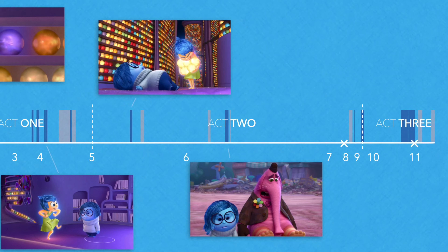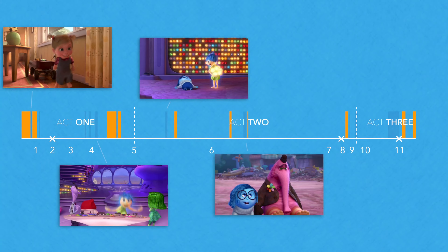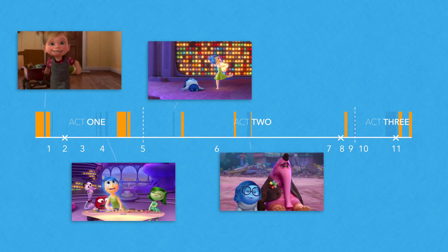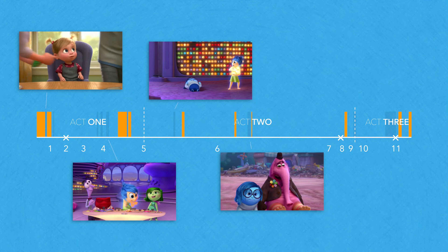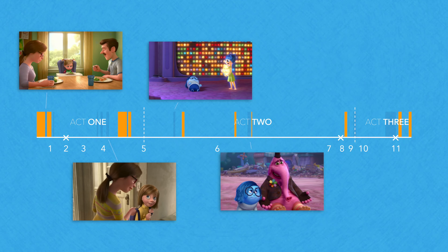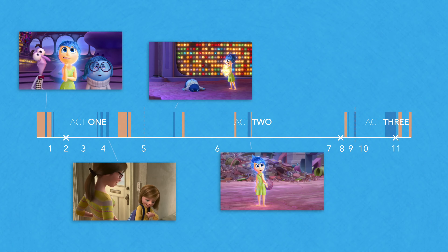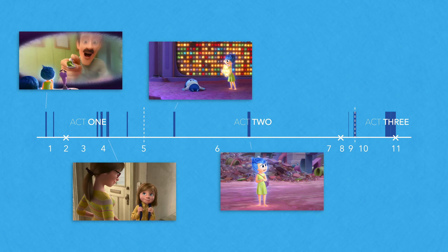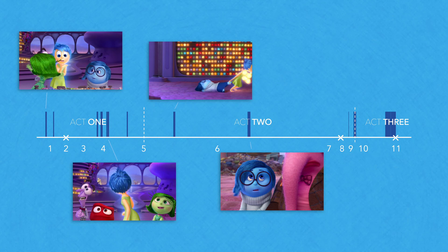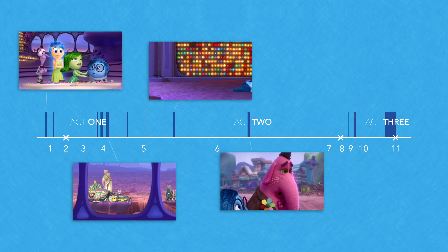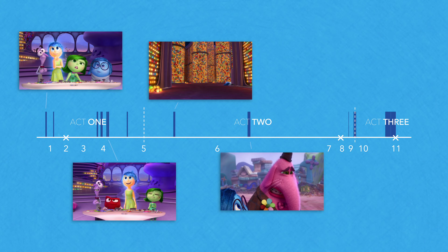Whereas the main theme, through its tonal design and sporadic use in Act 2, tells us of the physical separation between our protagonists and their home, Sadness' music — its development, increasing importance, and more subtle treatment — speaks of both Joy and Riley's changing attitudes.